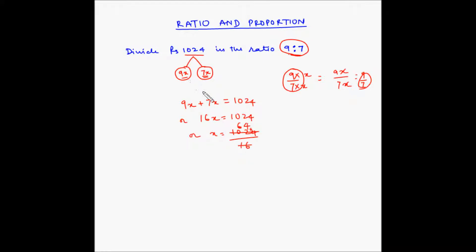Now, if we put the value of x in this, 9 multiplied by 64. 9 4s are 36, 6 is here and 3 carry over. 6 9s are 54 plus 3, 57. And the other part is 7 times x, 7 multiplied by 64. 7 4s are 28, 2 carry over. 6 7s are 42 plus 2 is 44.